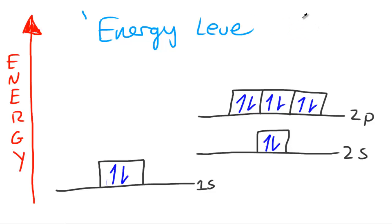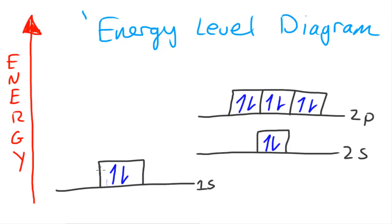Each of these three representations is suitable depending on what you're trying to represent. You can choose which one to use — sometimes you might not want to go into the detail of energy levels. Those are the three ways we can represent electron configurations, and I hope this was somewhat helpful.